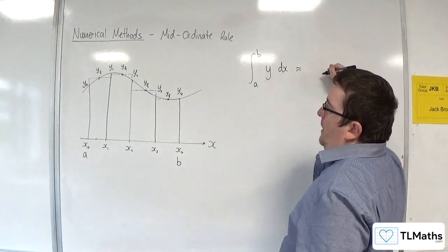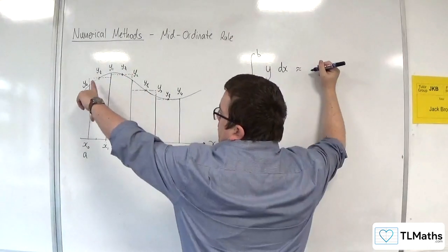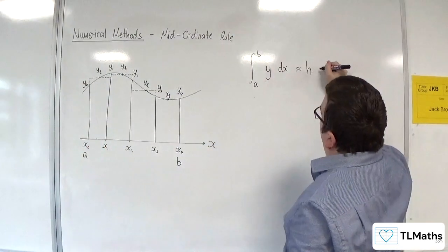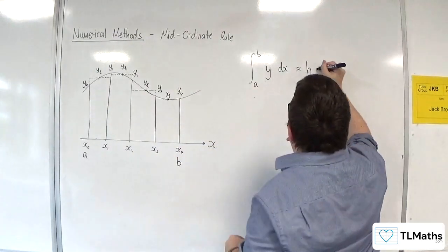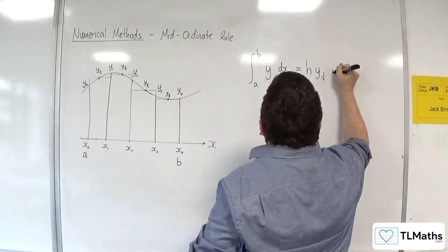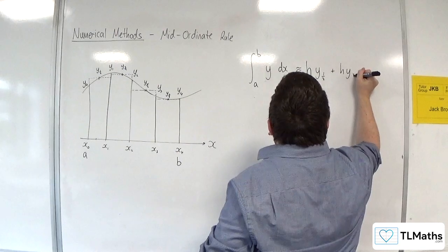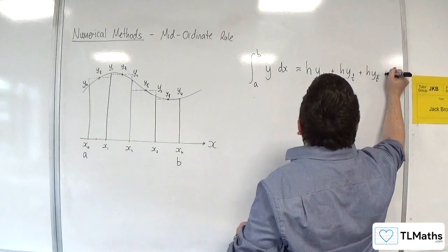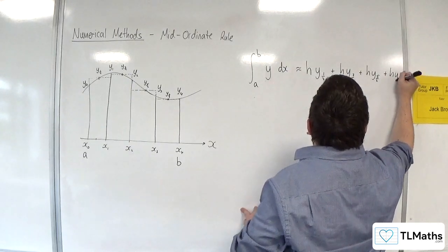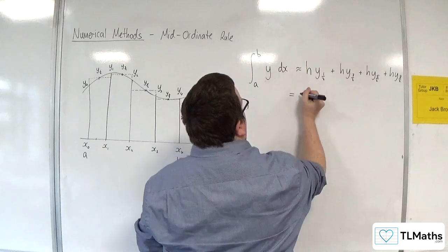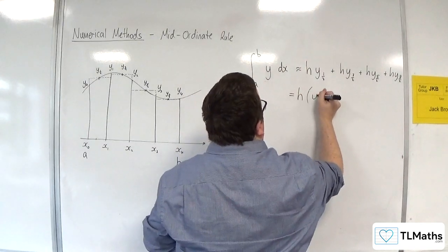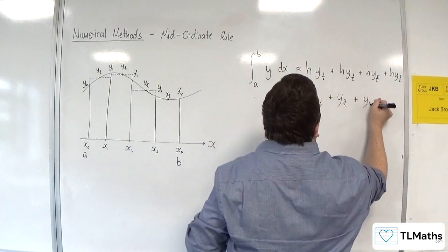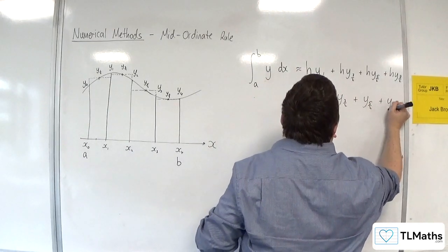It will be approximately equal to whatever the width of the strip is, so h times y₁/₂, plus h times y₃/₂, plus h times y₅/₂, plus h times y₇/₂. Of course, you could factor that h out.